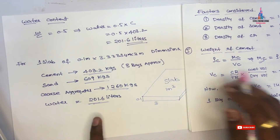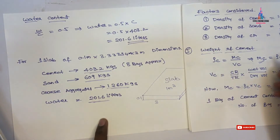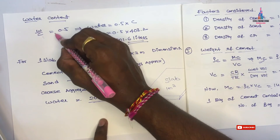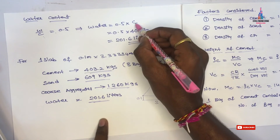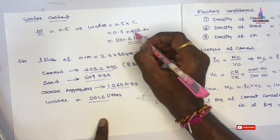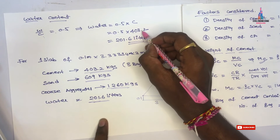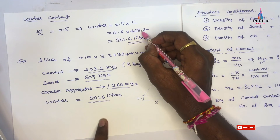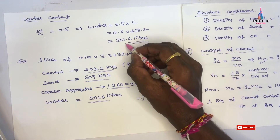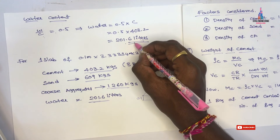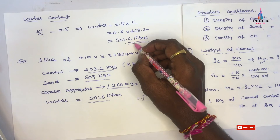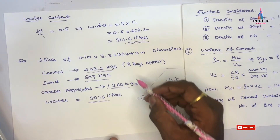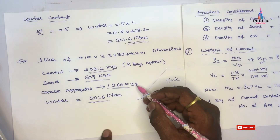For water content: from M20 grade concrete, the water-cement ratio (W/C) equals 0.5, which means water equals 0.5 times the cement quantity. So water equals 0.5 multiplied by 403.2, which gives 201.6 liters. For casting 1 cubic meter of slab, 201.6 liters of water are required.